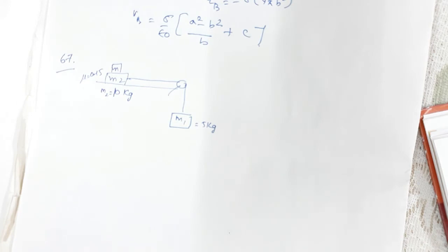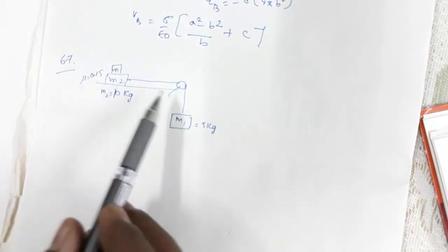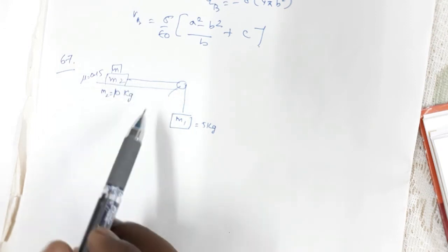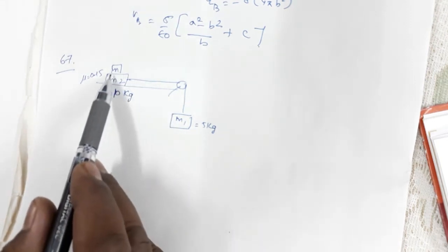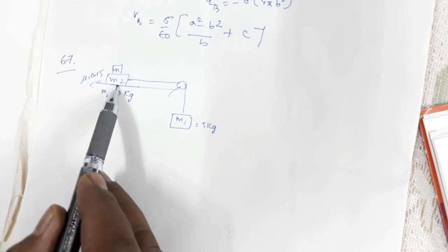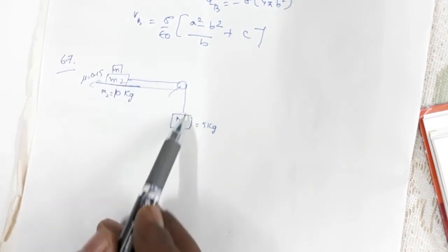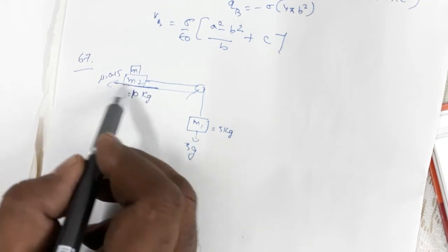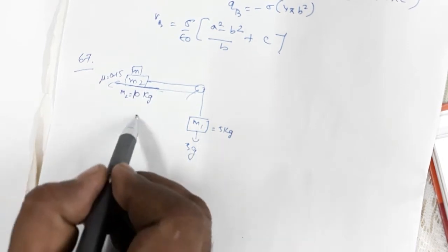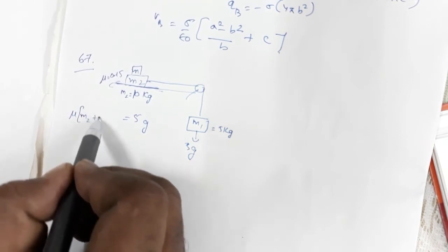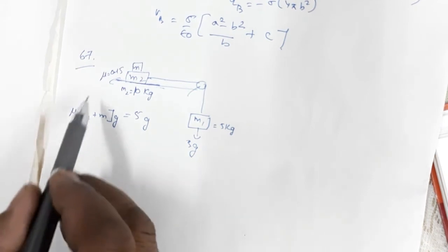Question number 67: you have a system of two masses m1 and m2, with a mass m placed over m2. You need to find the value of m so that the system is at rest. For the system to be at rest, the forces must balance. The tension equals the weight of the hanging block, which is 5g. The net force on the block system must be zero, so in one direction the force is 5g.